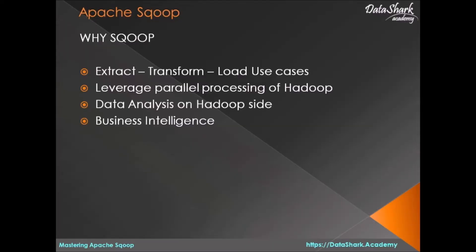Welcome back to DataShark Academy. Why do we need Apache Sqoop in the big data world? As we learned, Sqoop is designed to import data from relational tables to a Hadoop system. Hadoop is ideal for batch processing of huge amounts of data and is the industry standard nowadays. Using Sqoop's capabilities, we can transfer data from legacy systems into Hadoop and then leverage the parallel processing capabilities of Hadoop to process huge amounts of data and generate meaningful business insights.